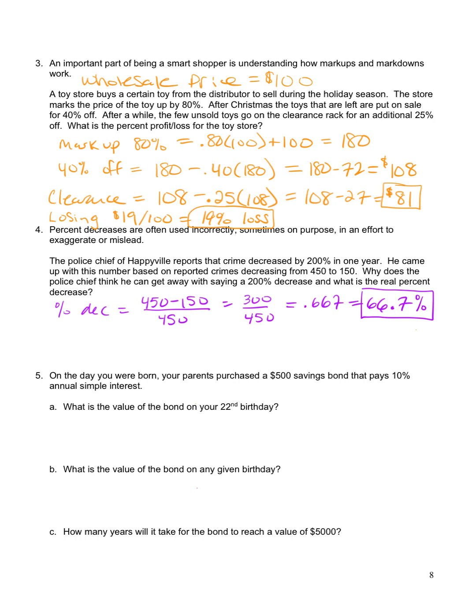What the police chief did is, instead of dividing by the original amount of crimes, he divided by the new amount of crimes, 150, and 300 over 150 is 200. So that is incorrect. He can't get away with saying a 200% decrease. It's actually impossible to have a 200% decrease.